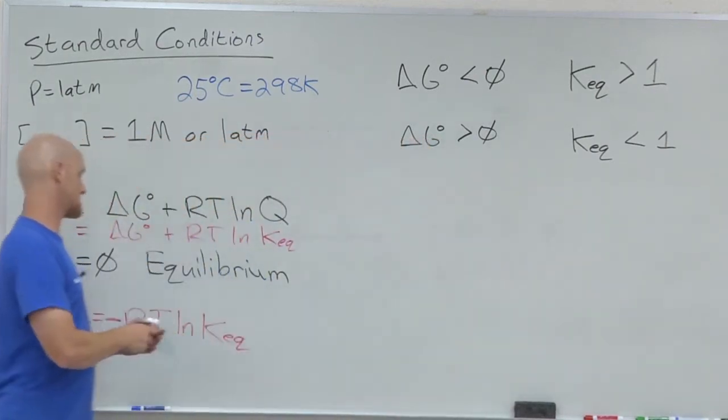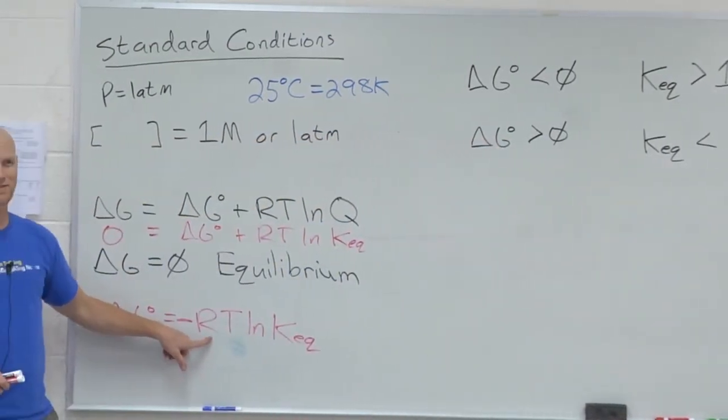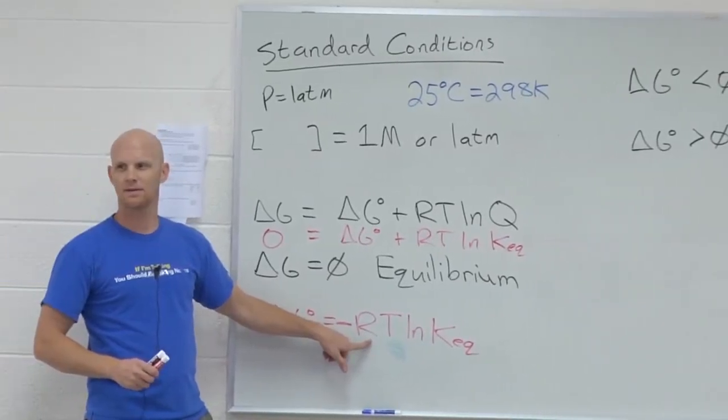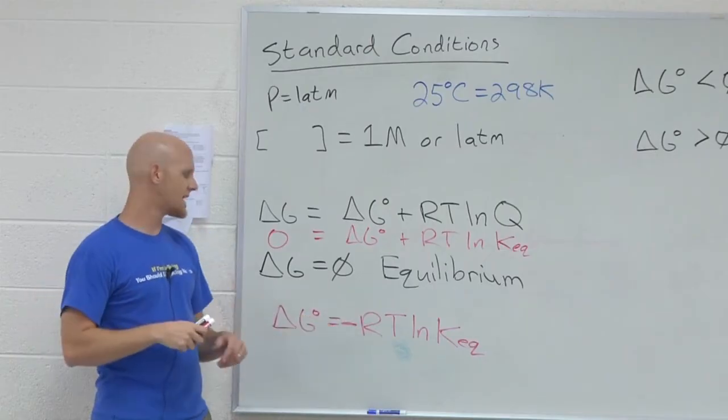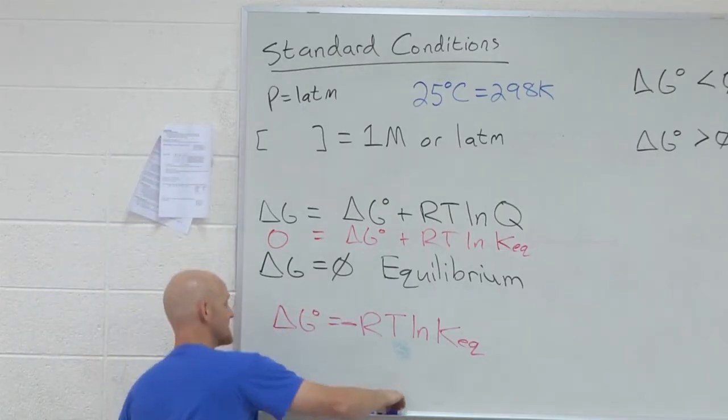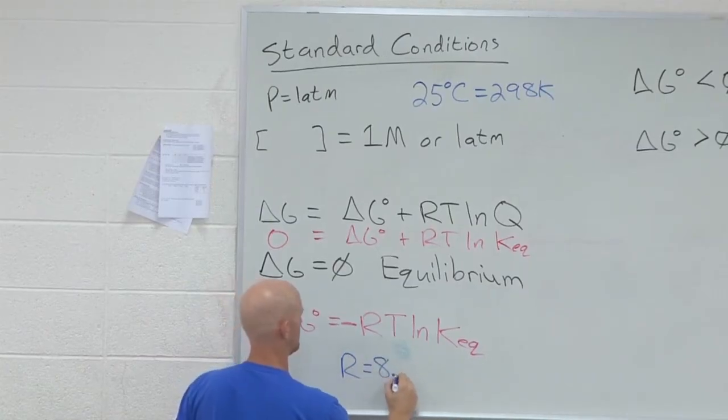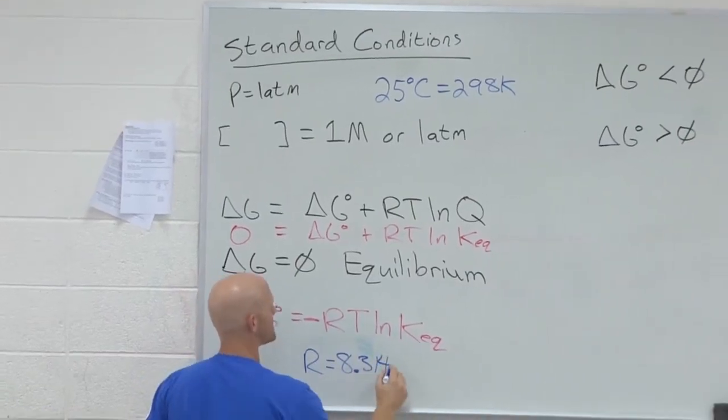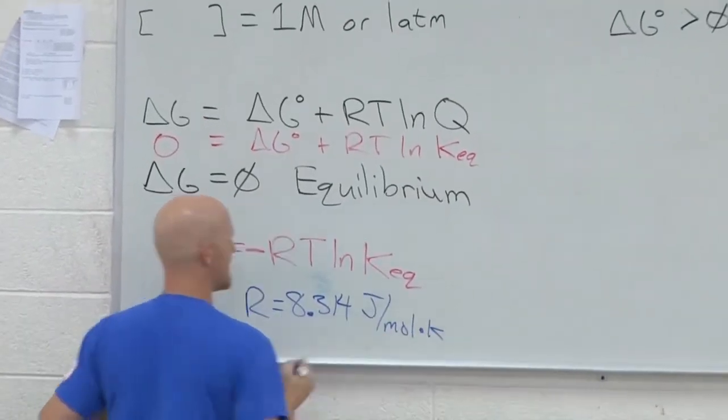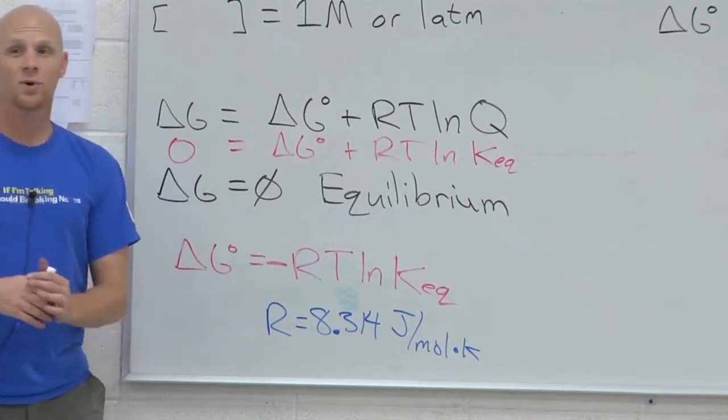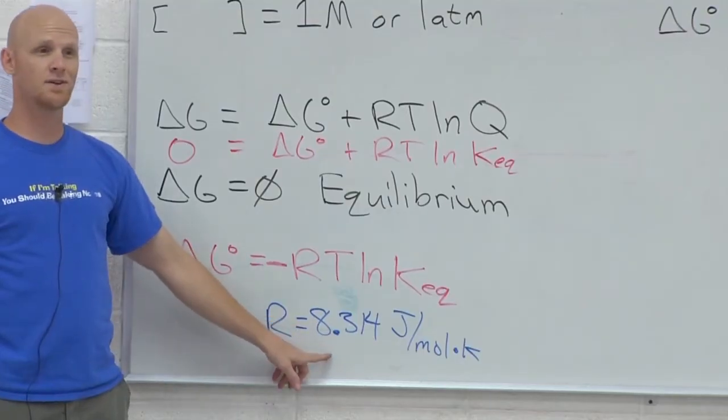One thing to note, R here. What is R called? Anybody remember? Not rate constant, but gas constant. The universal gas constant. In this case, the most common value you're going to have provided for you that's relevant to this chapter is 8.314 joules per mole Kelvin.